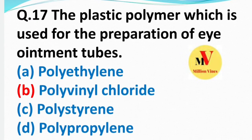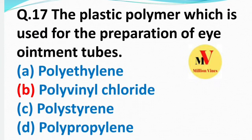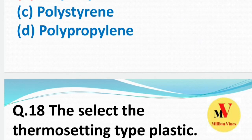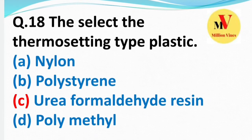Next question: The plastic polymer which is used for the preparation of eye ointment tubes — the right answer is B — polyvinyl chloride (PVC).